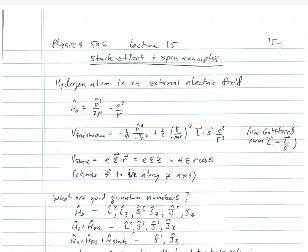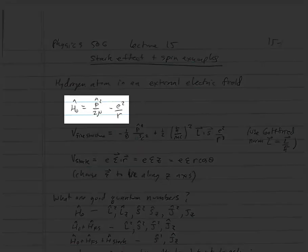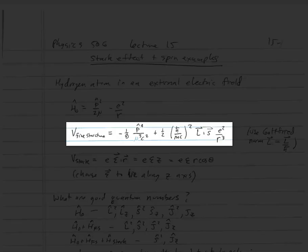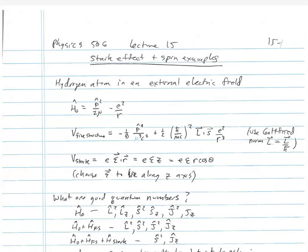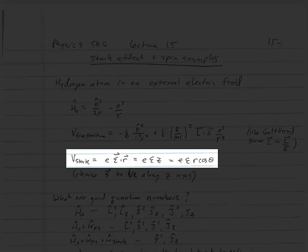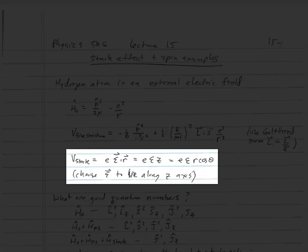For the hydrogen atom in an external field, we take as our H0 the full hydrogen Hamiltonian, p² over 2μ minus e² over r. The fine structure Hamiltonian is minus 1/8 p⁴ over μ³c² plus 1/2 (ℏ/mc)² l·s times e² over r³. We're using the Gottfried normalization where l equals l over ℏ. The electric field perturbation from the Stark effect is given by the electric charge e times ε·r. If we take the electric field along the z direction, that becomes eεz, or eεr cosθ.